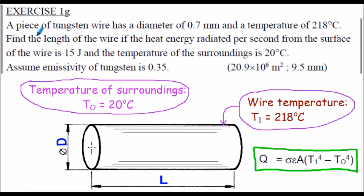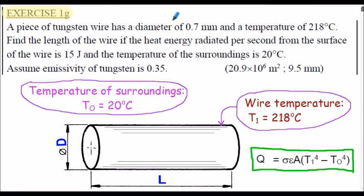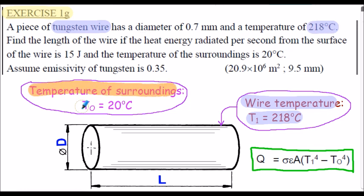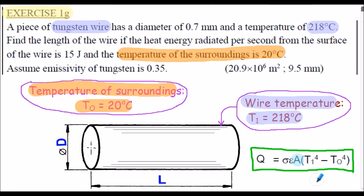Here's exercise 1G — a sketch of our problem. Wire temperature is stated as 218 degrees C, and the temperature of our surroundings is 20 degrees C. Essentially with this solution, we need to rearrange our energy equation to find A, the outside surface area, and then from our formula for the surface area, rearrange to find the wire length labelled L.